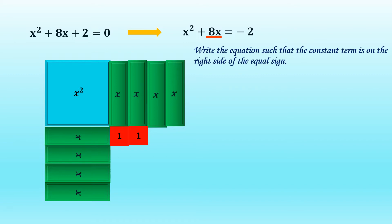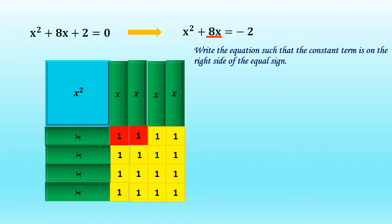Now we are supposed to make a square out of our tiles, but we have only these tiles, so we are going to add more tiles. We add 10 yellow tiles to make it into a square. On the x squared part on top, we write x, and since we have 4 green tiles, we write plus 4. On the left side, we have another x and we add another 4 for the 4 green tiles.